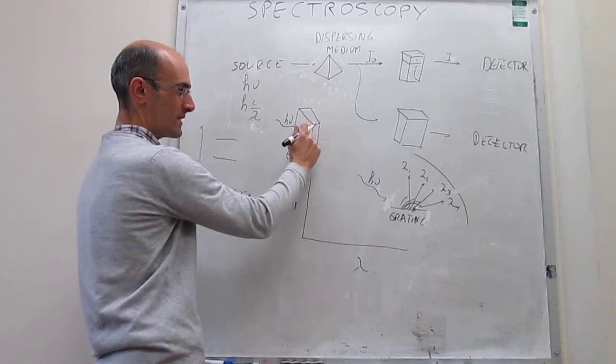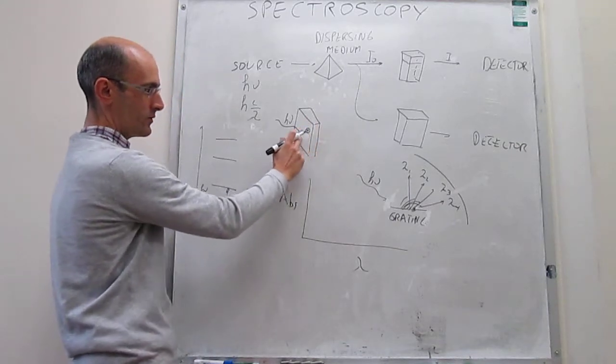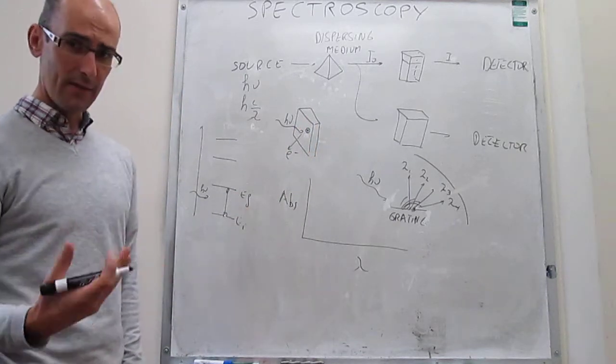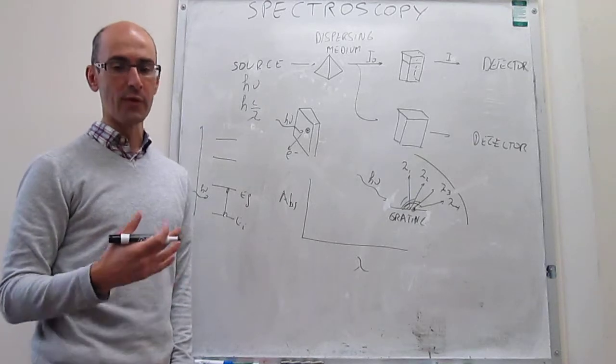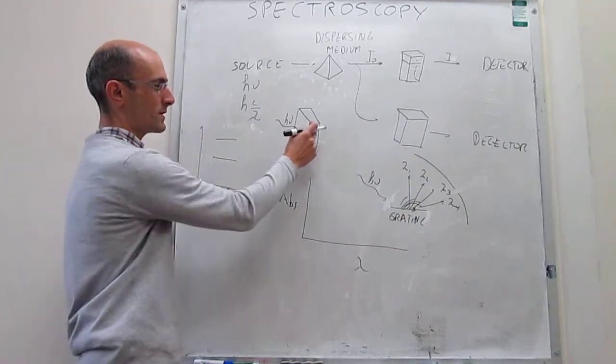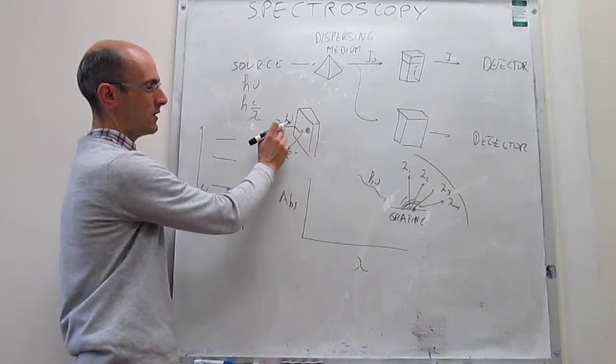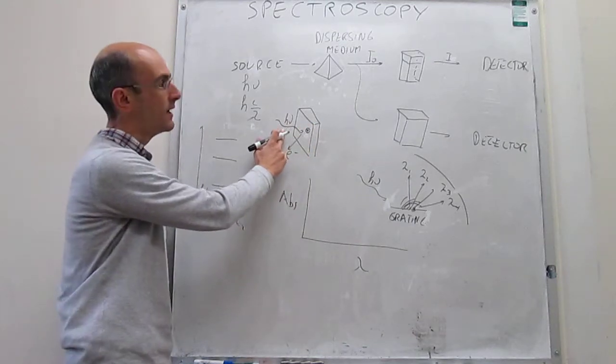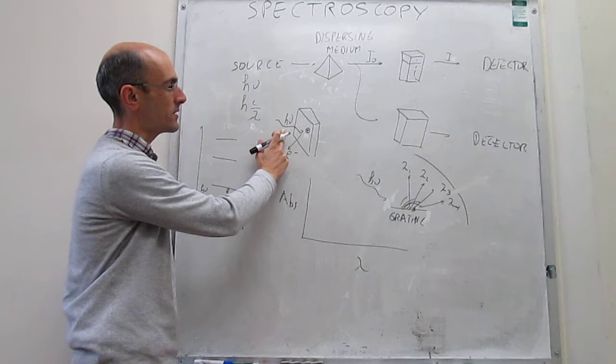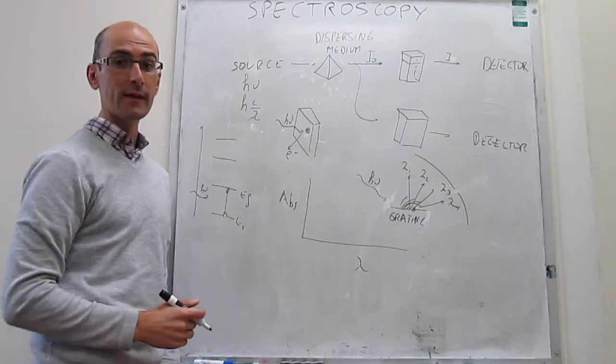And it turns out that you can actually measure the current due to those positive holes, and that is really proportional to the number of photons that have arrived. So by measuring this current generated by the positive holes, you can detect how many photons have arrived at the detector, and from there you can calculate the absorbance.